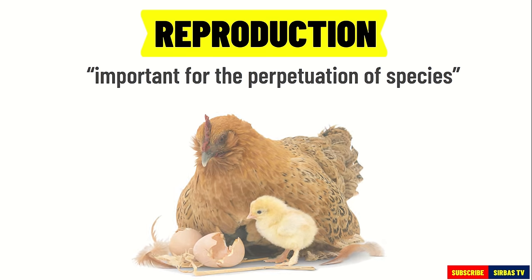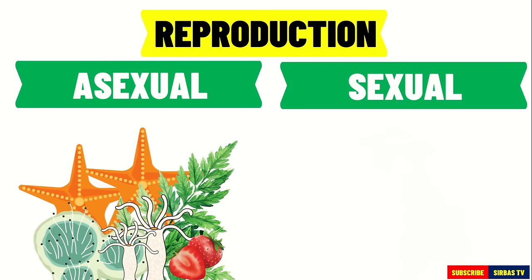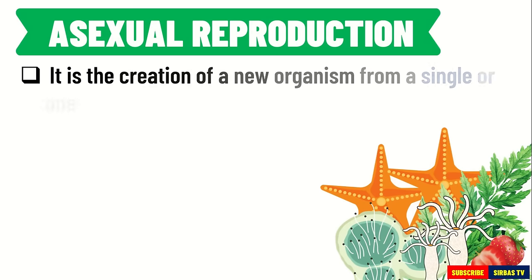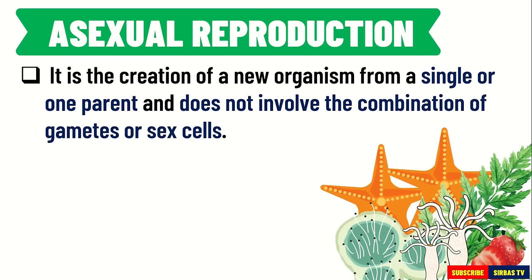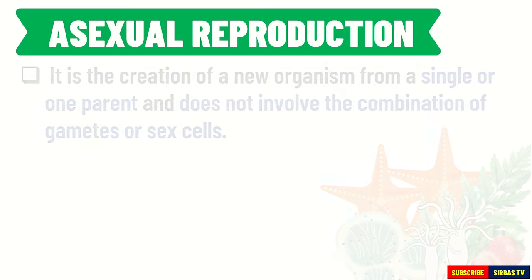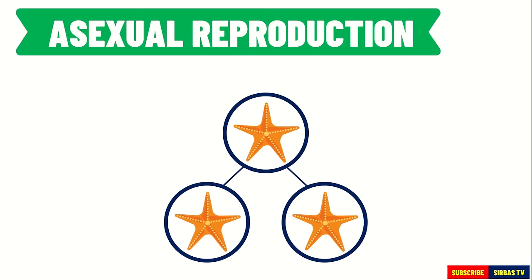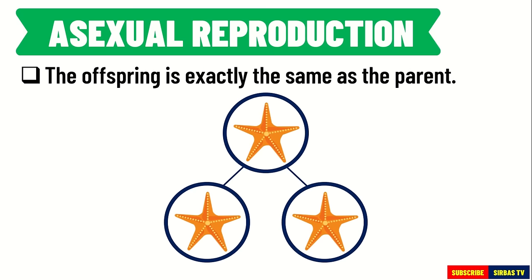Reproduction in an organism may be classified into asexual and sexual reproduction. Asexual reproduction is the creation of a new organism from a single or one parent and does not involve the combination of gametes or sex cells. Since there is only one parent involved in asexual reproduction, the offspring will solely inherit the hereditary information from its parent. Thus, the offspring is exactly the same as the parent.